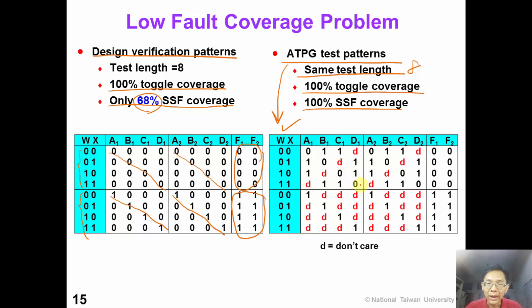Now we can compare with ATPG test patterns, which also have the same test length of 8 patterns. We have 100% toggle coverage and also 100% single stuck-at fault coverage. So the quality of ATPG test patterns is better than the design verification patterns. However, as we can see in the figure, there are many don't-cares in the ATPG test patterns, and we actually don't know what the purpose of each test pattern is. So if the circuit fails, the test designers do not know how to fix the design.